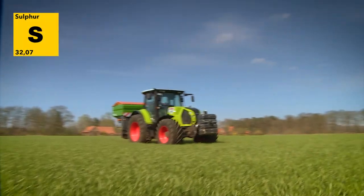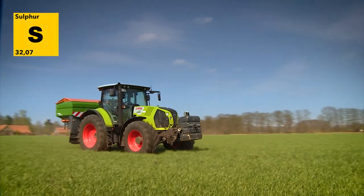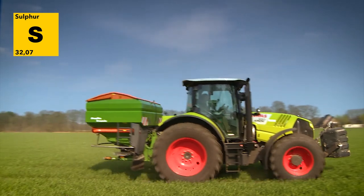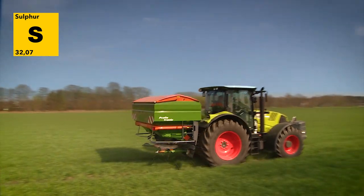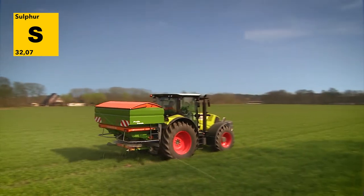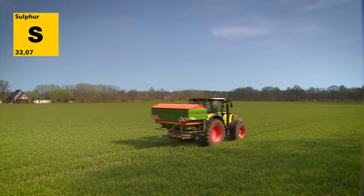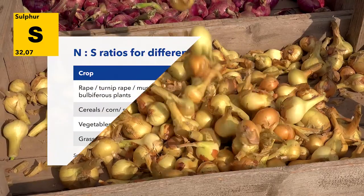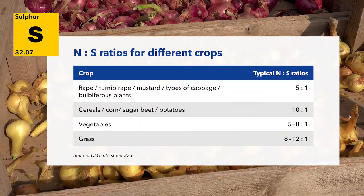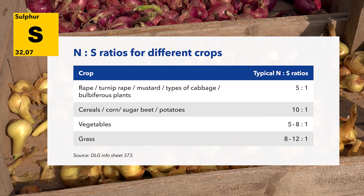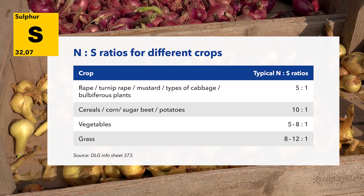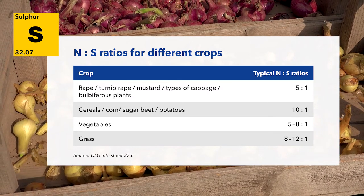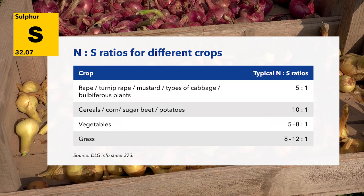In a nutshell, to improve the absorption of nitrogen, mineral fertilizers with sulfur in the form of sulfate are best for a fast nutrient availability and a neutral pH effect. Depending on the cultivated crops, we recommend a nitrogen to sulfur ratio ranging from 5 to 1 to 12 to 1. In this way, you can ensure that your crops are best supplied.